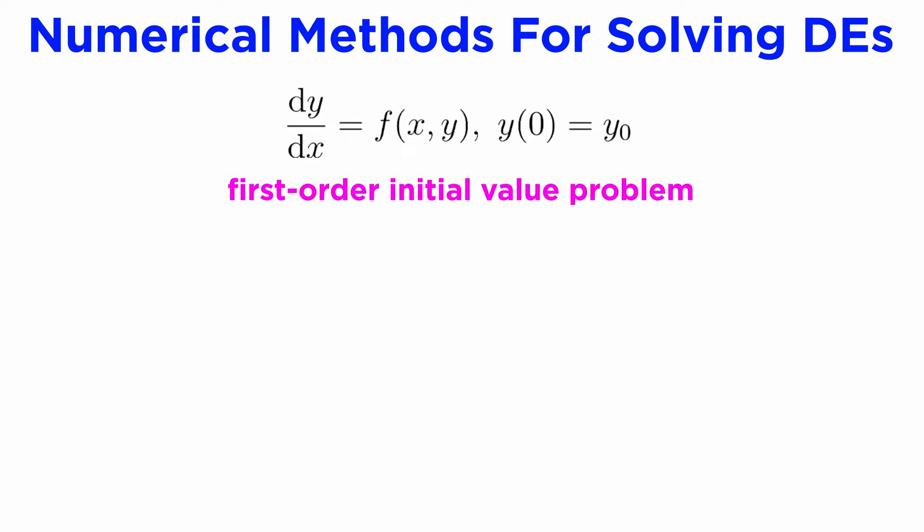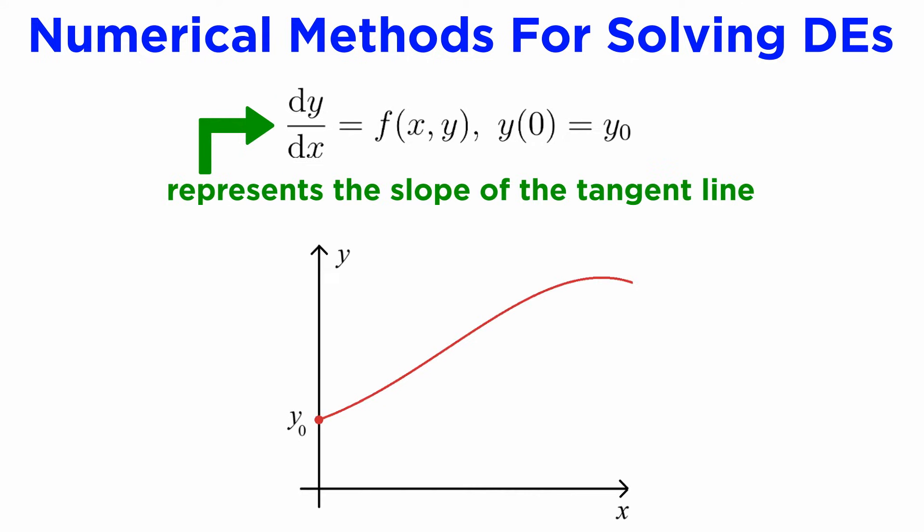Let's suppose we have any general first order initial value problem, which can be written in the form dy/dx equals f(x,y) with some initial y(0), which we'll call y₀. Knowing nothing at all about the function f, is there anything we can do? Recall that dy/dx really represents the slope of the tangent to the curve when we have a plot y against x at a given point.